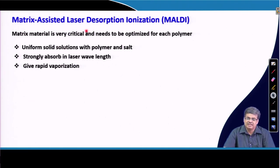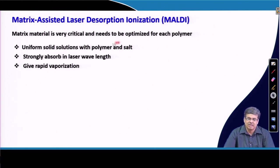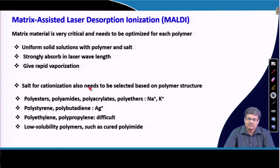The matrix material is very critical in this technique and needs to be optimized for each polymer. There is no hard and fast rule — only guidelines from prior experience — about which matrix should be used for a particular polymer. The matrix must form a uniform solid solution with the polymer, strongly absorb the laser at the particular wavelength, and give rapid vaporization. The salt for cationization also needs to be selected based on polymer structure: for polyesters, polyamides, and polyacrylates, sodium or potassium ions are used; for more hydrophobic polymers like polystyrene and polybutylene, silver ions are used. Polyethylene and polypropylene are very difficult to ionize using this technique.